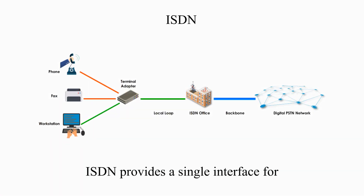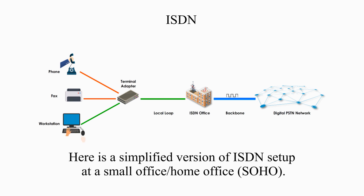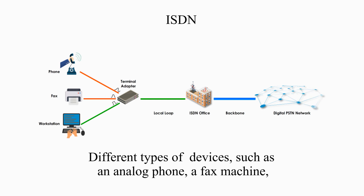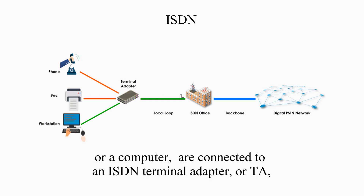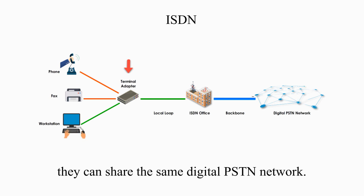ISDN provides a single interface for hooking up your telephone, fax machine, and computers. Here is a simplified version of an ISDN setup at a small office or home office. Different types of devices, such as an analog phone, a fax machine, or a computer, are connected to an ISDN terminal adapter, or TA, which converts different types of data into ISDN format so that they can share the same digital PSTN network.